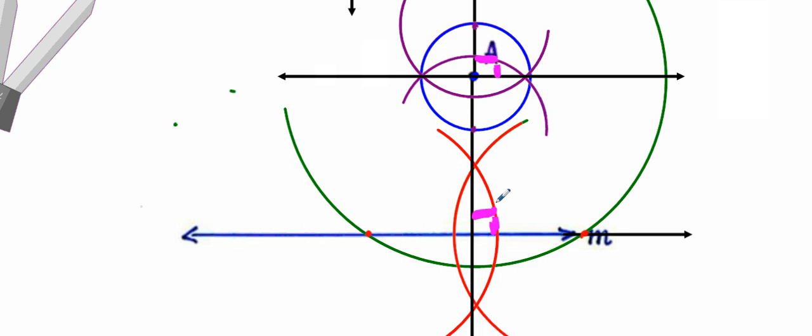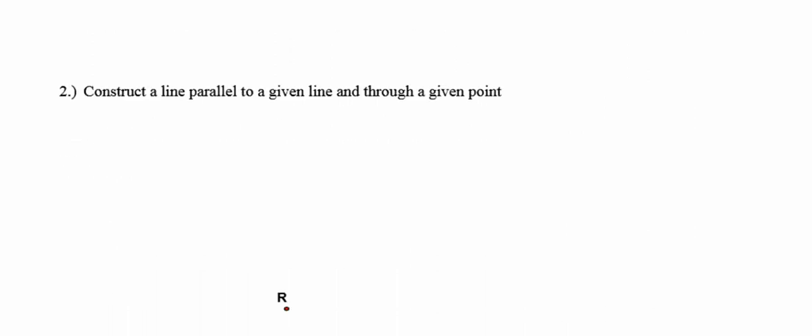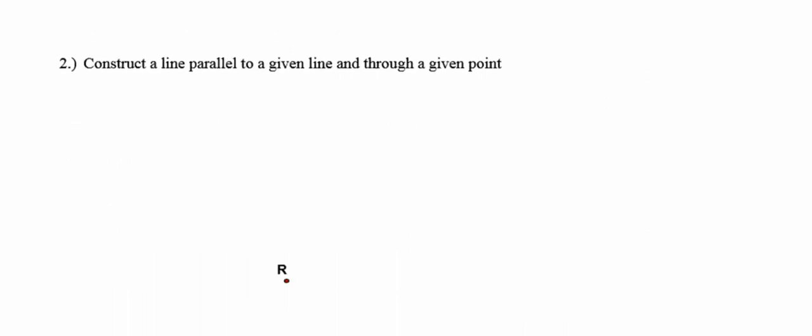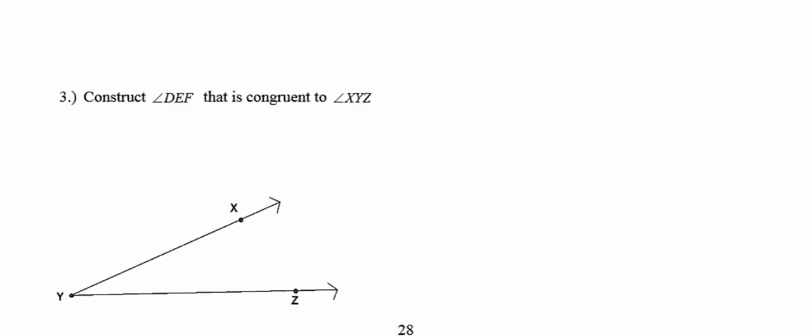If you have questions that the video hasn't answered, rewatch to see if that helps. If not, jot those questions down at the top of the next page under 'Check Your Understanding' so I can address them next class. Then go ahead and do the two constructions on the next page: construct a line parallel to the given line through the point, and copy an angle congruent to the given angle.